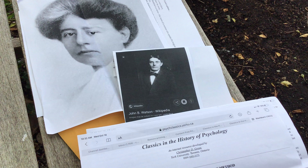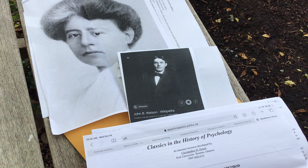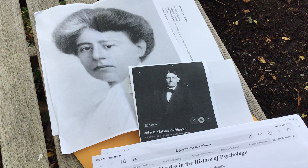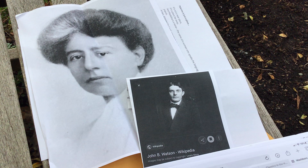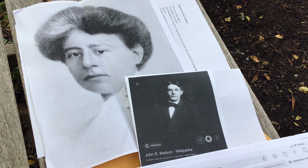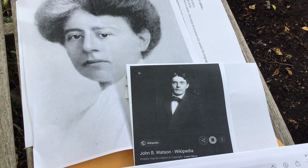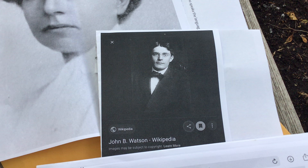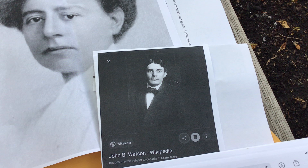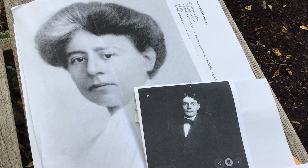Sitting here on a park bench outside one of our excellent small-town libraries on Whidbey Island in Washington. I'm looking at photographs of John Watson and Margaret Fleur Washburn. This segment is on the ideas of John Watson versus Margaret Washburn. I've taken a photograph of Watson as a younger man, about the time he would have been at Johns Hopkins, and not the older man who went into advertising whose picture I had showed previously.